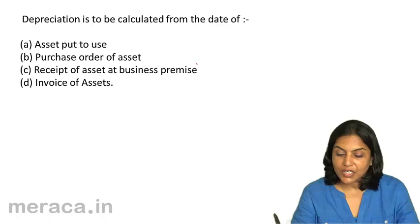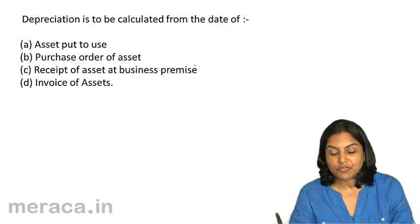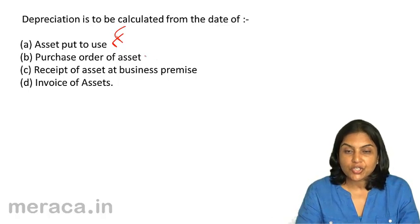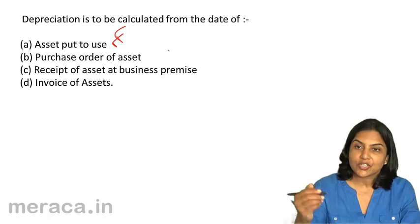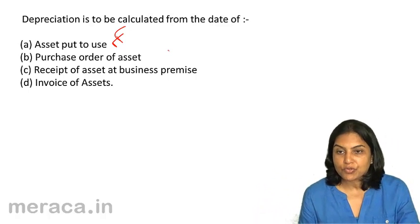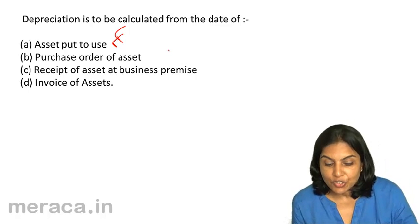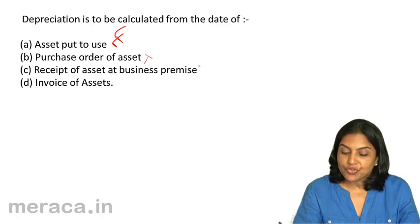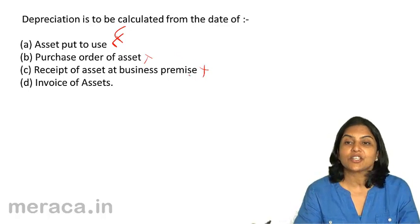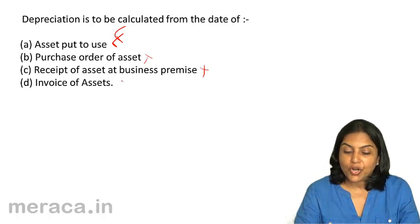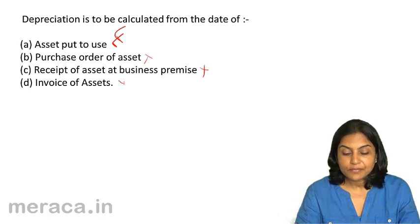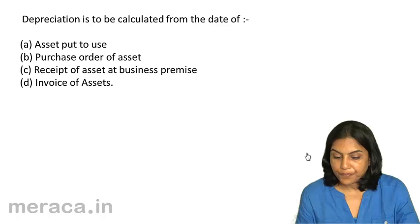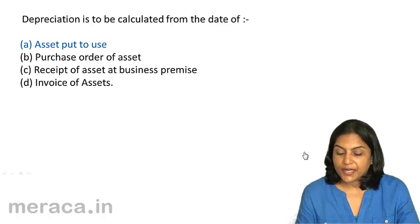It cannot be based on the purchase order of the asset, because if the asset is not in a condition to be used immediately, it should not qualify. It is not enough to just receive the asset at the business premises — it needs to be installed and ready to use. It would not depend on the invoice of the asset. The correct answer is A — asset put to use.